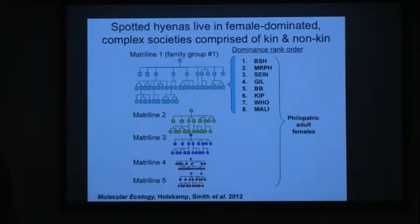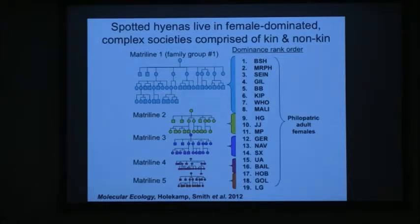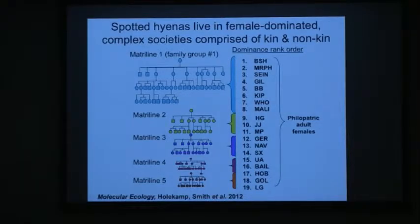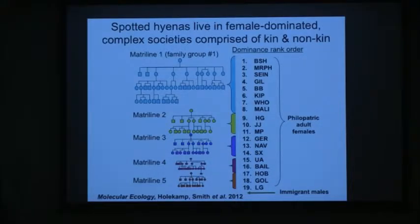All females are philopatric — they stay at home — and their offspring rank directly below them. If males want to mate, they have to leave the group. Once they reach reproductive age, they disperse into a totally new group and must enter at the very bottom, subordinate to all adult females. So when we think about cooperation, adult females are the best social allies and wield the most power. Kinship, theoretically, should matter a lot.